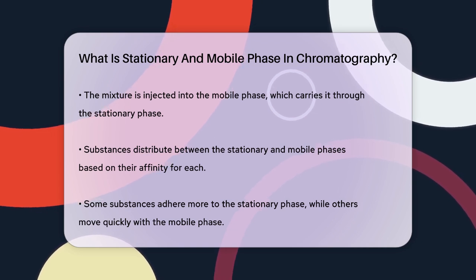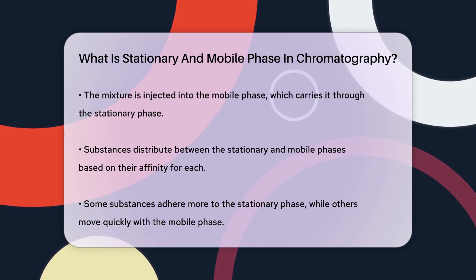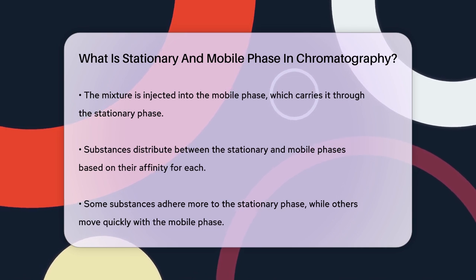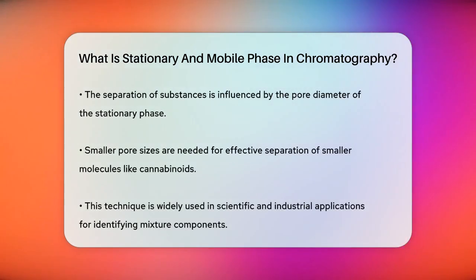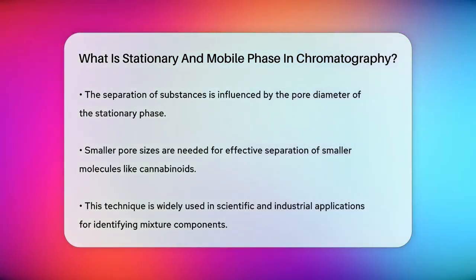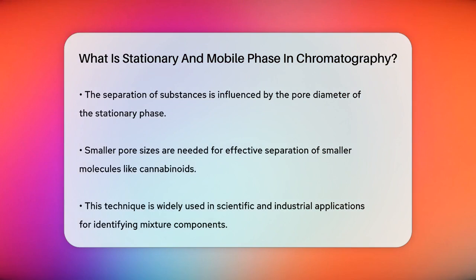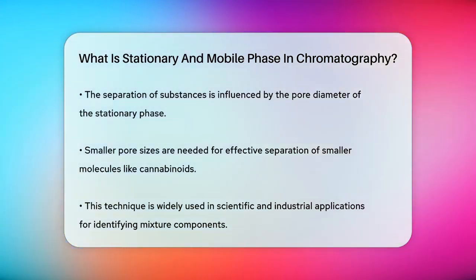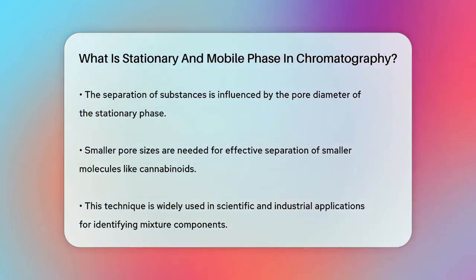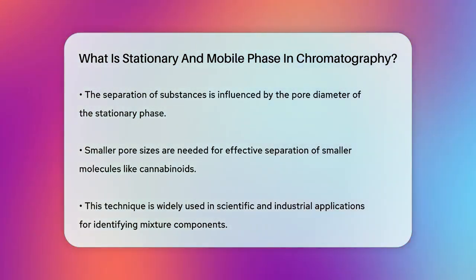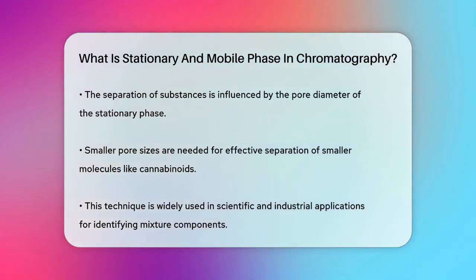The pore diameter of the stationary phase is also important. It needs to be the right size to allow the particles of the substances to pass through, which helps in effective separation. For example, smaller molecules like cannabinoids need smaller pore sizes to separate them from larger molecules.